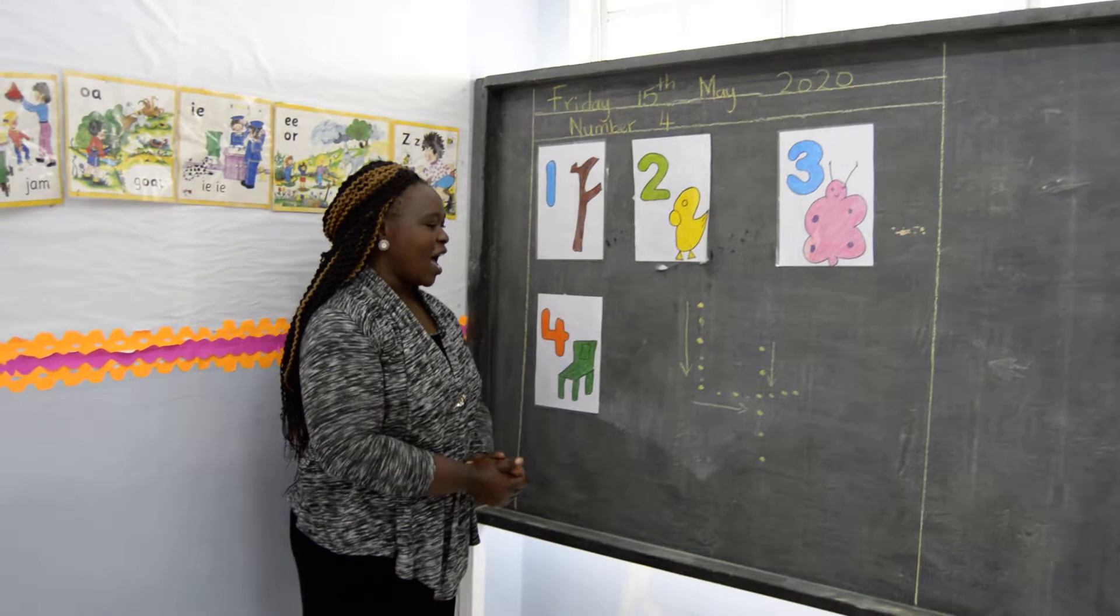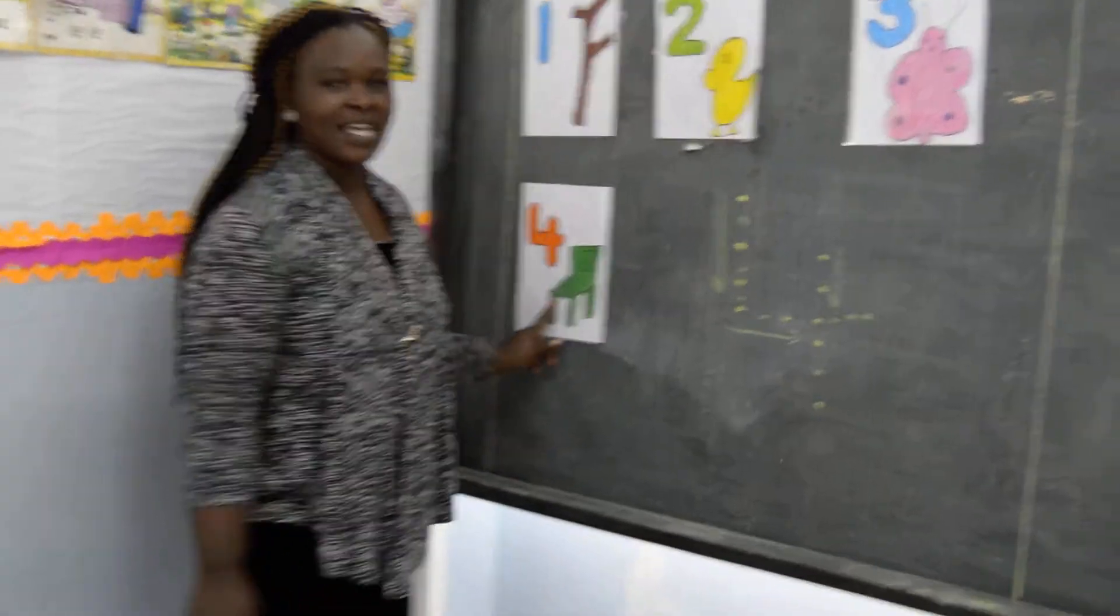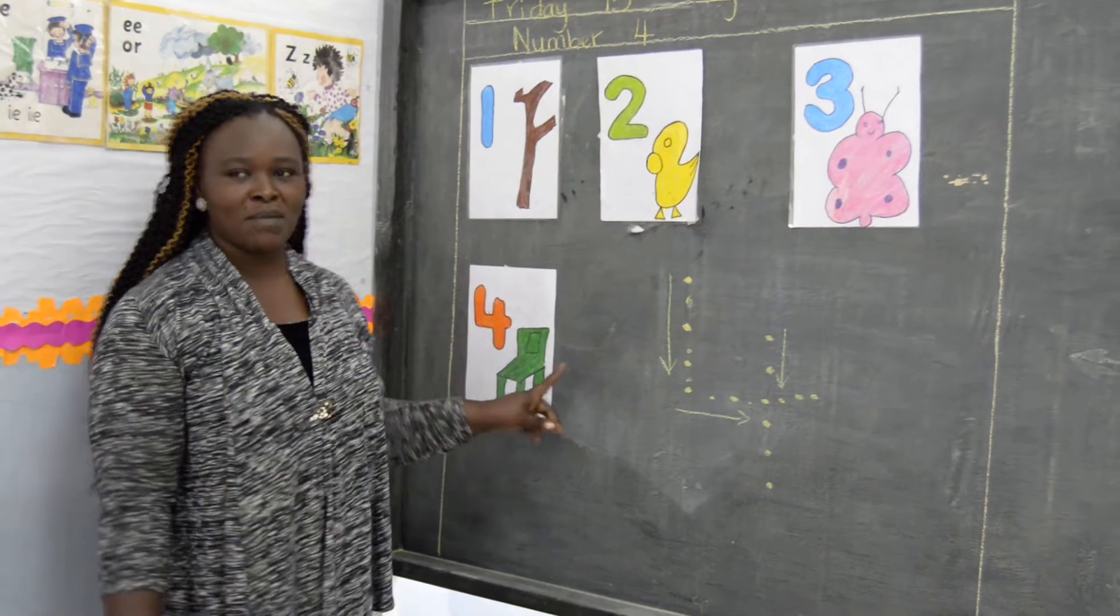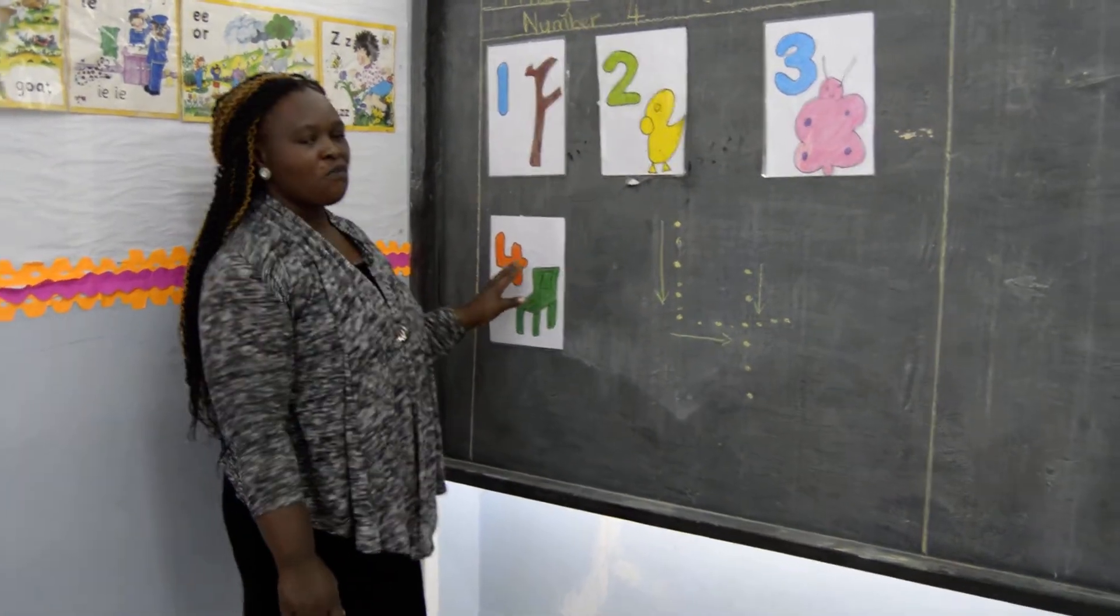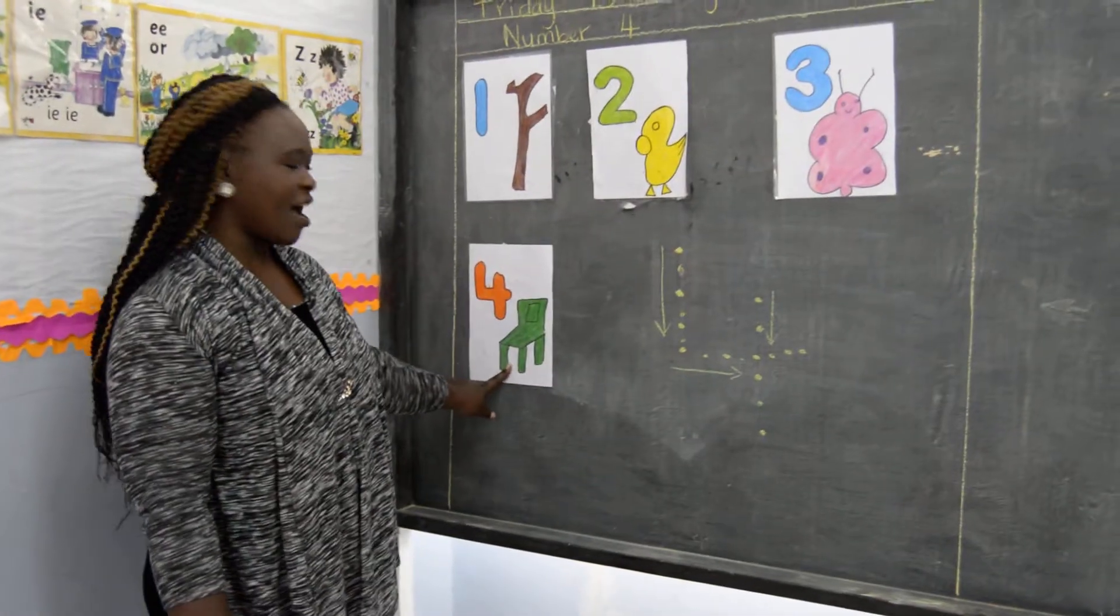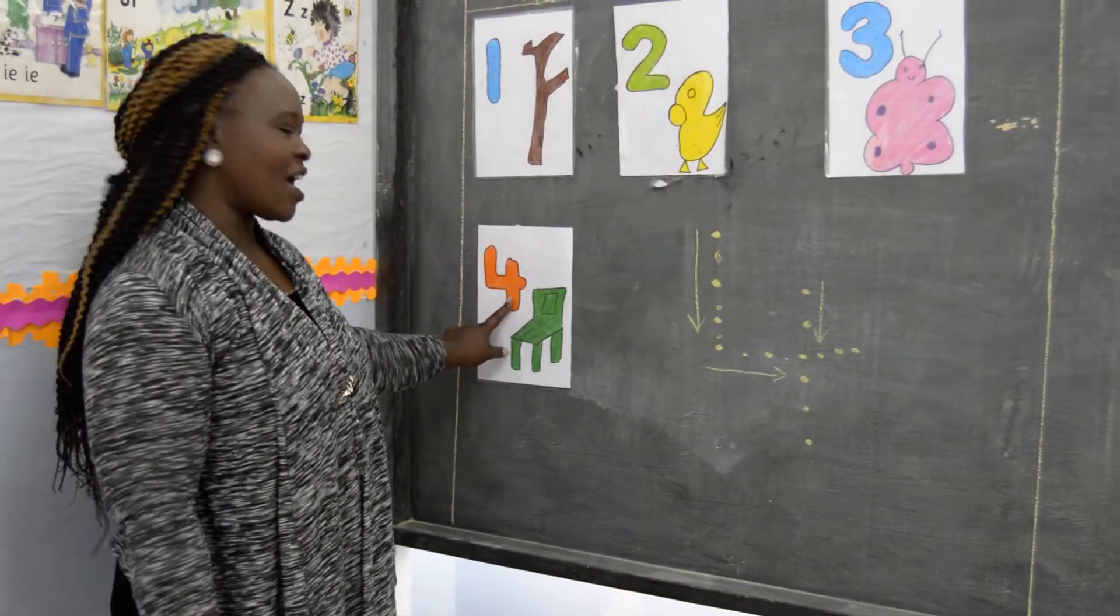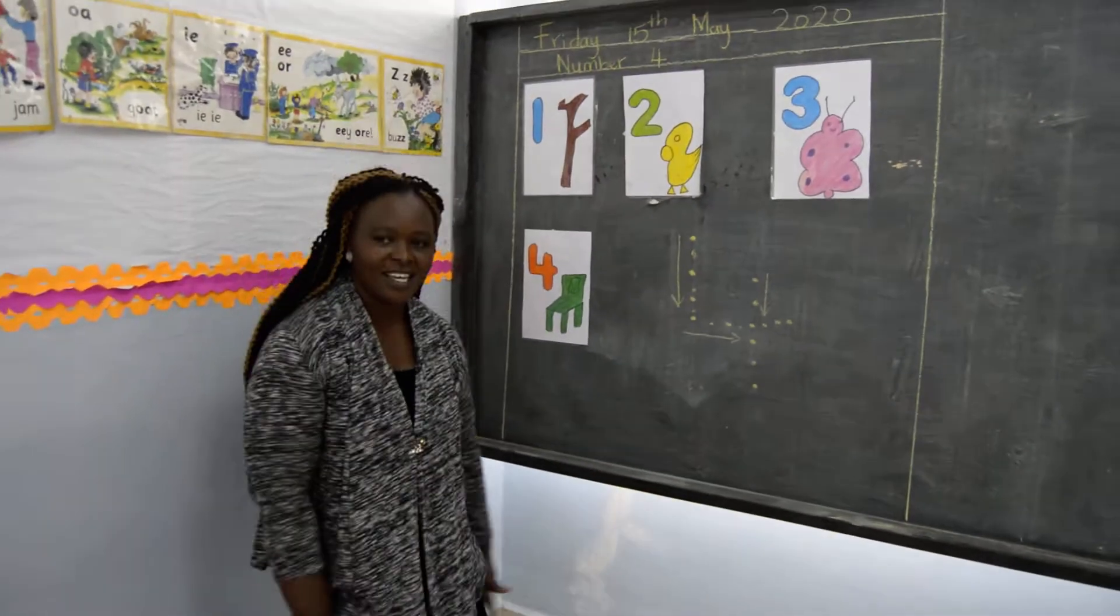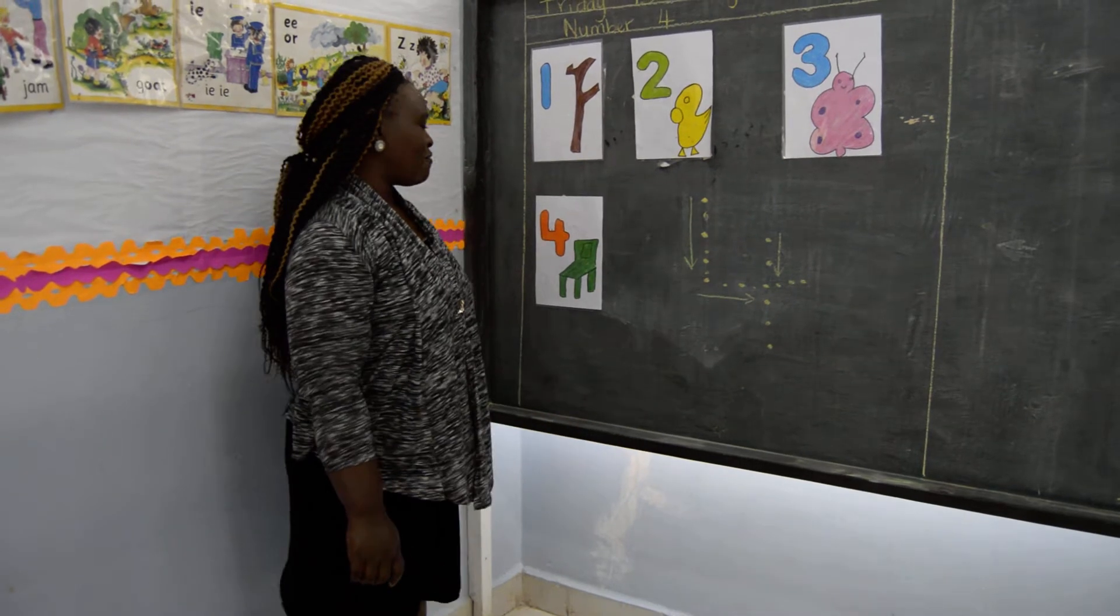And today, our number of the day is number four. Can you say after me, children? Four. Four like a chair. Four like a chair. Sit, sit, sit, sit. Very good.